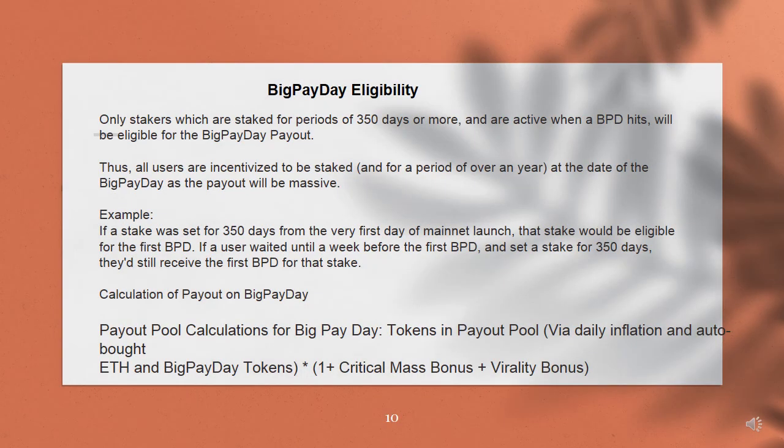Big Payday eligibility. Only stakers who are staked for periods of 350 days or more, and are active when a BPD hits, will be eligible for the big payday payout. Thus, all users are incentivized to be staked for a period of over a year at the date of their big payday, as the payout will be massive.